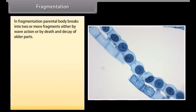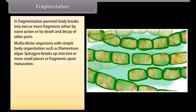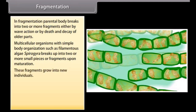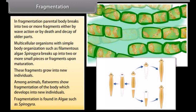Fragmentation. In fragmentation, the parental body breaks into two or more fragments, either by way of action or by death or decay of older parts. Multicellular organisms with simple body organization, such as filamentous algae like Spirogyra, break up into two or more small fragments upon maturation. These fragments grow into new individuals. Among animals, flatworms show fragmentation of the body, which develops into new individuals. Fragmentation is also found in algae such as Spirogyra.